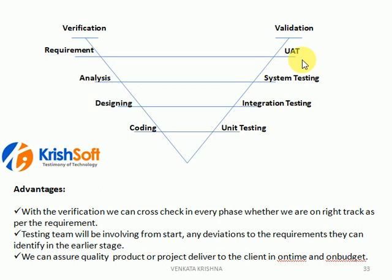That is the advantage. In the previous models, there is no verification technique and testing people are involved only at the end of the project, at the end of the coding. These are all the drawbacks in those models. To overcome all those, the stabilized model is the VV model — Verification and Validation.